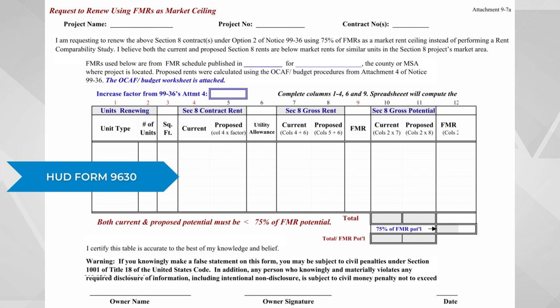This method allows owners to compare the proposed Section 8 rents to the small area FMRs. In this method, the small area FMR will serve as the rent ceiling.